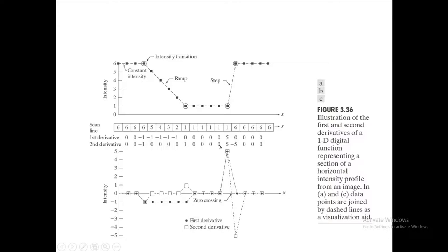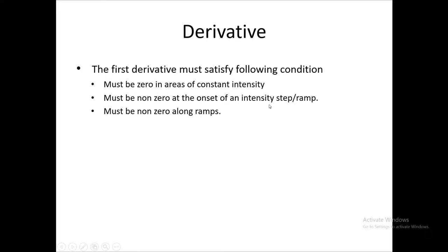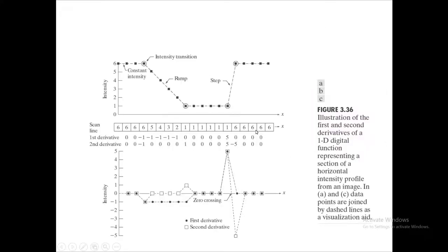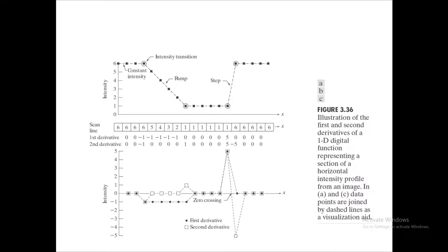Property two is satisfied for both derivatives: the second derivative is non-zero at the onset and end of the intensity ramp and step, and the first derivative is non-zero at the onset of the ramp. For property three, the first derivative is non-zero along the ramp, while the second derivative is zero along the ramp — since the second derivative is the derivative of the first derivative, it is zero along the constant slope of the ramp.